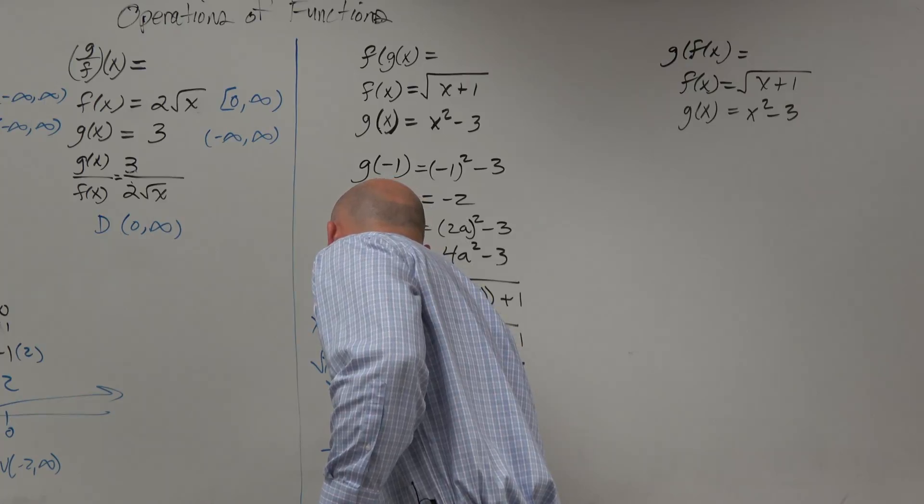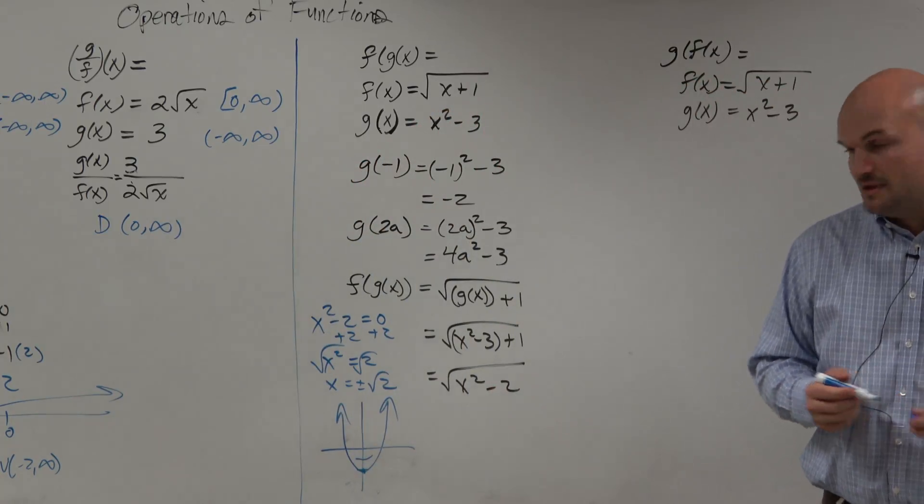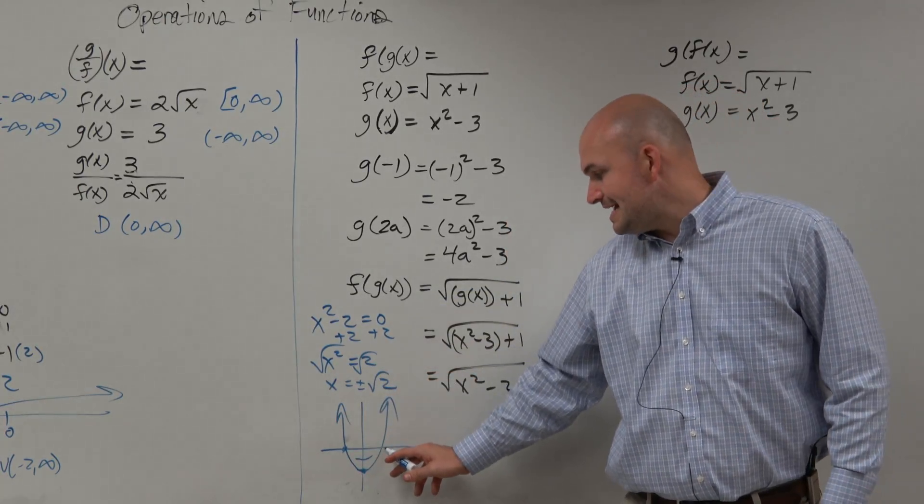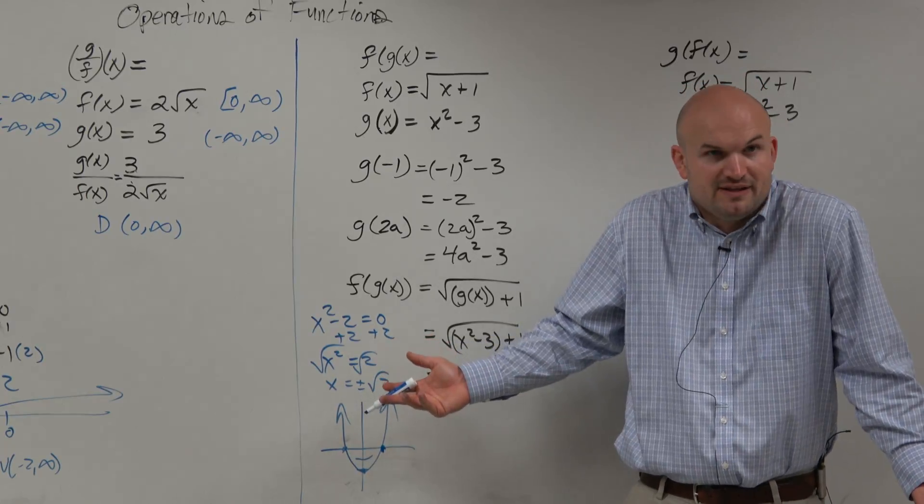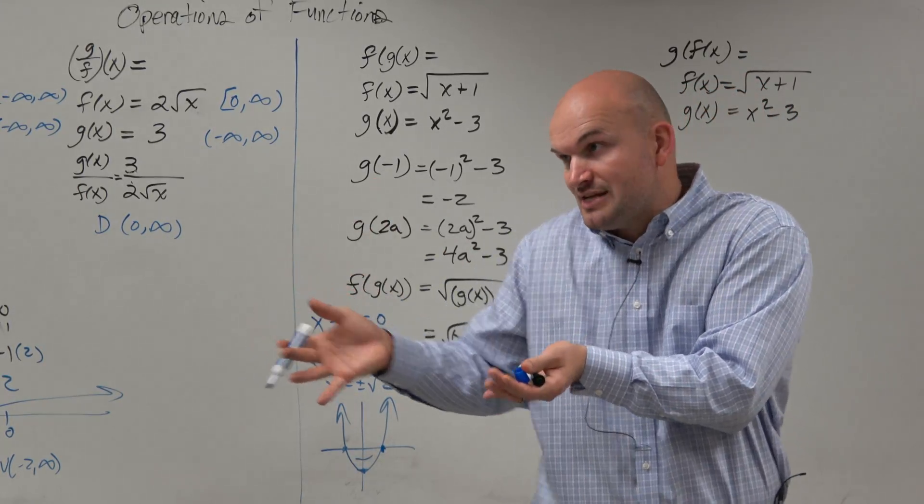That's a graph being shifted down two units to the left, right? The x-intercepts are at negative square root of 2 and at positive square root of 2. How do you find the x-intercepts? You solve, right? You set the equation equal to 0. Those are the x-intercepts.